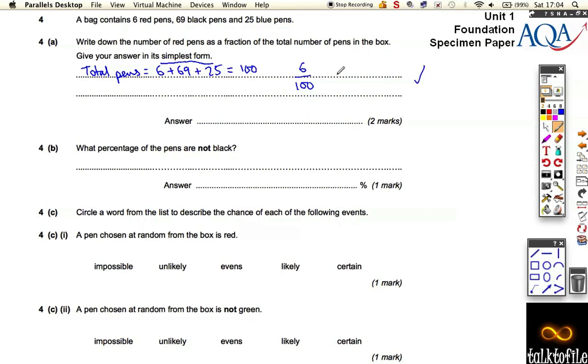But we have to write it in simplest form. So let's break this down. We can divide the top and the bottom by 2, so 3 over 50, and that would be our final mark out of the 2.